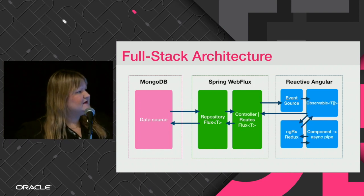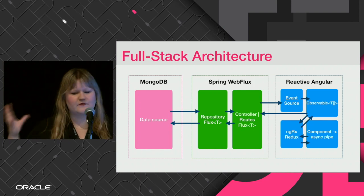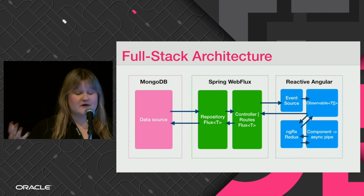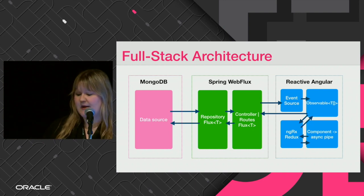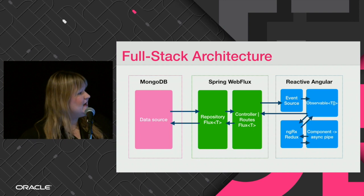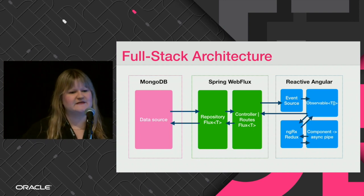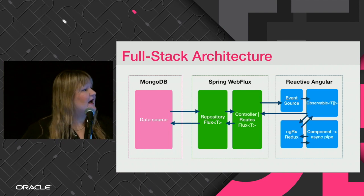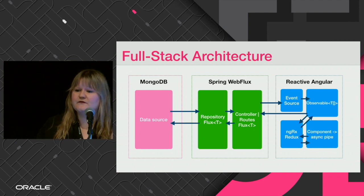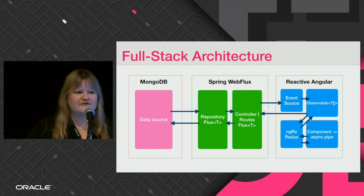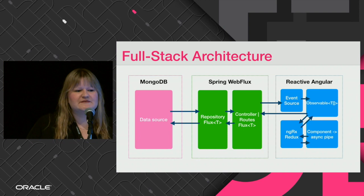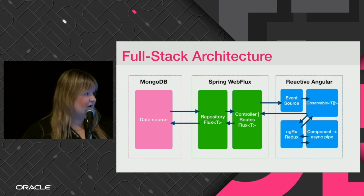To give a little bit more of an overview of the overall stack: MongoDB will work as our data source for the API. Then we're going to use Spring WebFlux. We have the reactive repository as part of the Spring API, and also the controller. If you like functional programming, in Spring 5 there are also routes you can use, though I still prefer controllers — it's just personal preference.